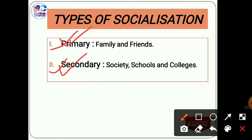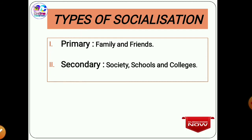Secondary socialization takes place outside the home — at school, colleges — and refers to different types of behaviors from those at home. Children must act according to the rules of the school. A likely exam question may ask which type of socialization 'friends' belong to — it could be either primary or secondary, so read the options carefully.